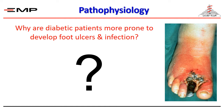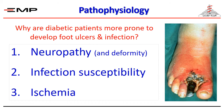Why are diabetics more prone to develop foot ulcers and infections? Several factors may contribute to diabetic foot problems, and the answer can be summarized in three words: because of neuropathy and its effects, because of infection susceptibility, and because of ischemia. The rest of the presentation will give more details about these three underlying etiologies.